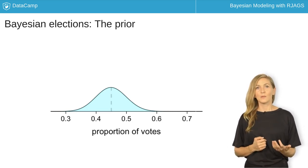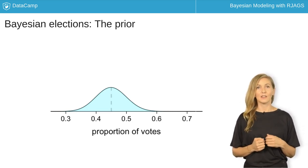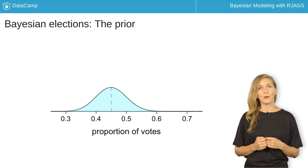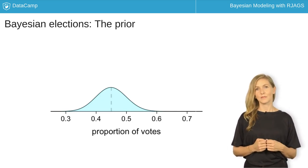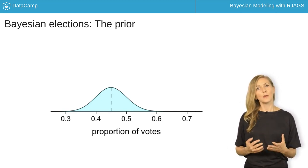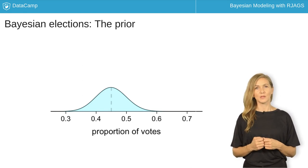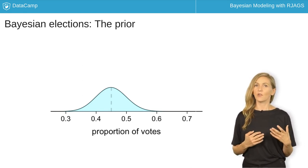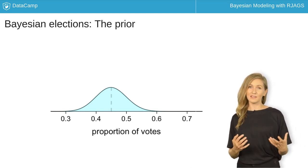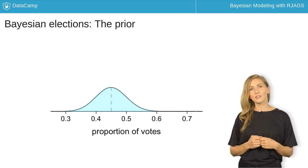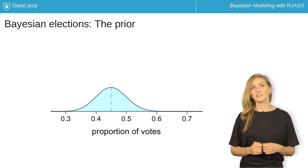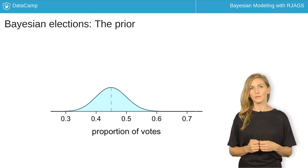Engineered from past polling and election data, the prior probability model shown here captures this uncertainty. You'll most likely receive around 45% of the vote. It's also unlikely, though possible, that you'll receive as little as 30% or as great as 60% of the vote.